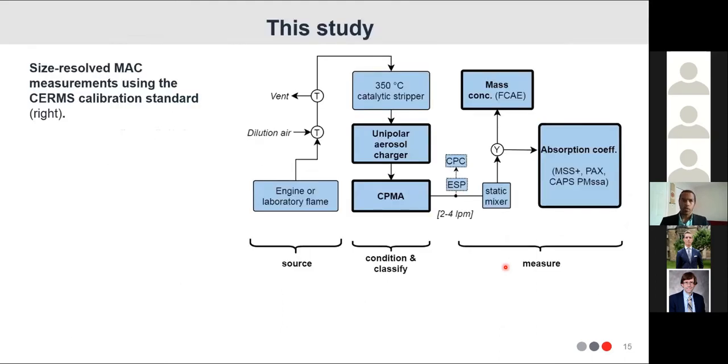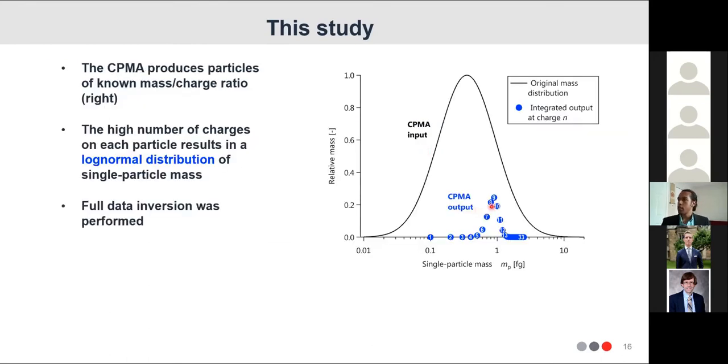So in this study, we're going to report results from the CIRMs, the CPMA electrometer reference mass standard. This is normally used for calibration, but in this study, we use it and interpret the results in terms of MAC. We have a few different sources, so this is simplified here because the setup varied. We use the CPMA electrometer to charge particles and select them by mass-to-charge ratio, and then measure the mass concentration coming out and the absorption coefficient after the CPMA. The key detail of this setup is that we use a UDAC, which is a corona charger, which gives us an extremely high number of charges per particle, and because of those high number of charges per particle, we actually end up with something like a log-normal distribution coming out of the CPMA. So we can use the mean or the mode CPMA mass, output mass, to represent the single particle mass of the particles coming out. We don't have to worry about multiple charge correction. It's built into our setup.